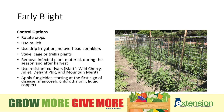Another method is to use resistant cultivars. Some cultivars to consider include Matt's Wild Cherry, Juliet, Defiant, and Mountain Merit — these would be a way to reduce our use of chemicals. But in some seasons when we have a lot of rainfall, we're going to get some disease and will probably need to apply a fungicide. I recommend applying the fungicide at the first sign of spots on the plant — start early and don't wait too long. Fungicides containing mancozeb, chlorothalonil, and liquid copper have worked well in research trials.